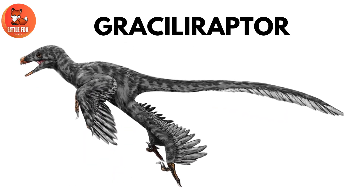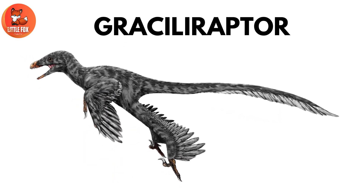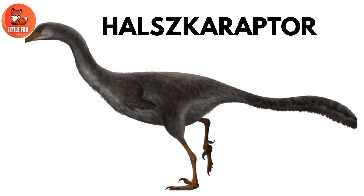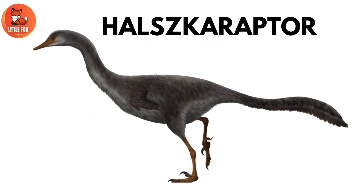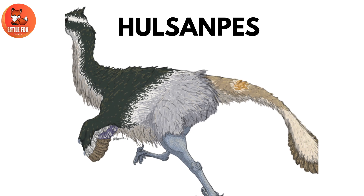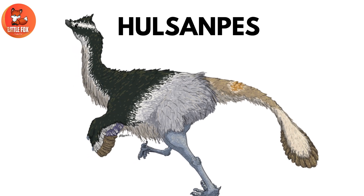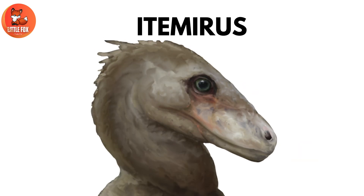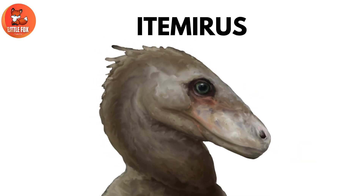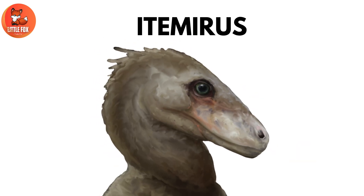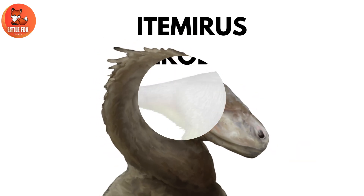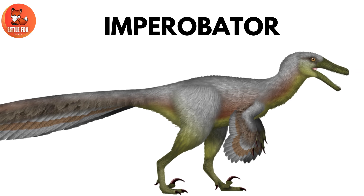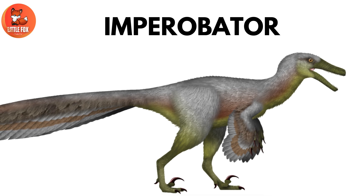Number 16: Brassili-Raptor. Number 17: Halska-Raptor. Number 18: Halsimps. Number 19: Itamiris. Number 20: Imperibator.